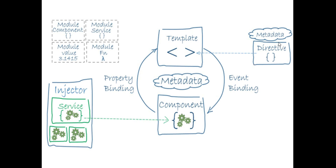Then we have directives, which are mostly used to make changes directly on the DOM — like changing the background color of a text. We can call a directive like 'colorChange', add the text, and close it. Whatever logic is written inside this directive — for example, keeping the background red — will be applied directly on the DOM.